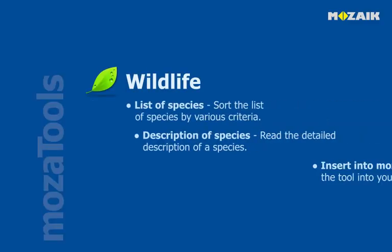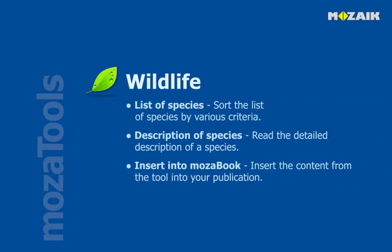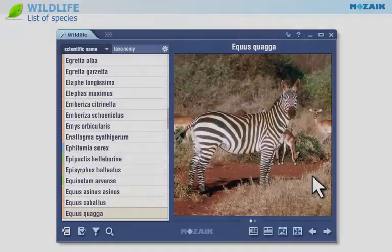Wildlife. This tool features a list of species that you can sort by various criteria, read detailed descriptions of each species, and insert content from the tool directly into your MozaBook publication. Let's find out how to use the wildlife tool.